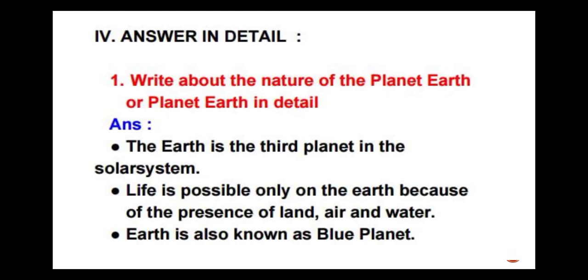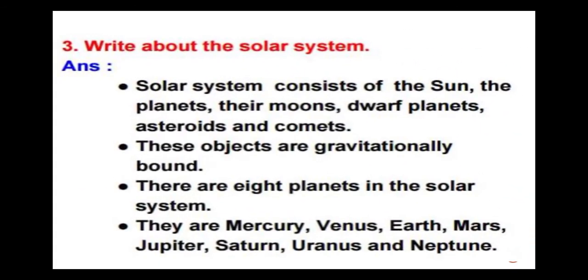The next question: write about the solar system. Solar system consists of the sun, the planets, their moons, dwarf planets, asteroids and comets. These objects are gravitationally bound. There are eight planets in the solar system.